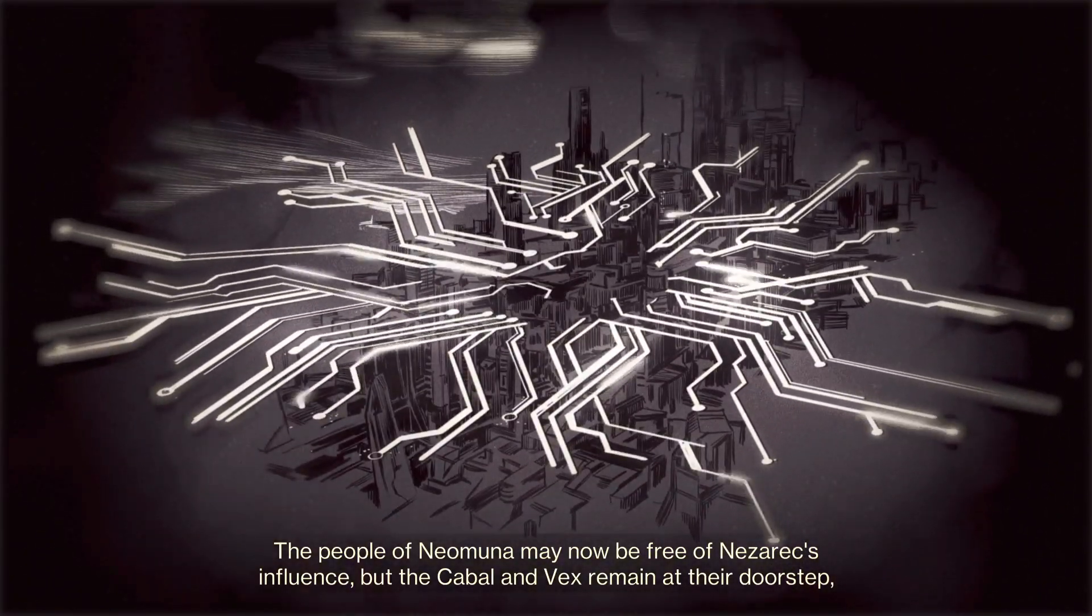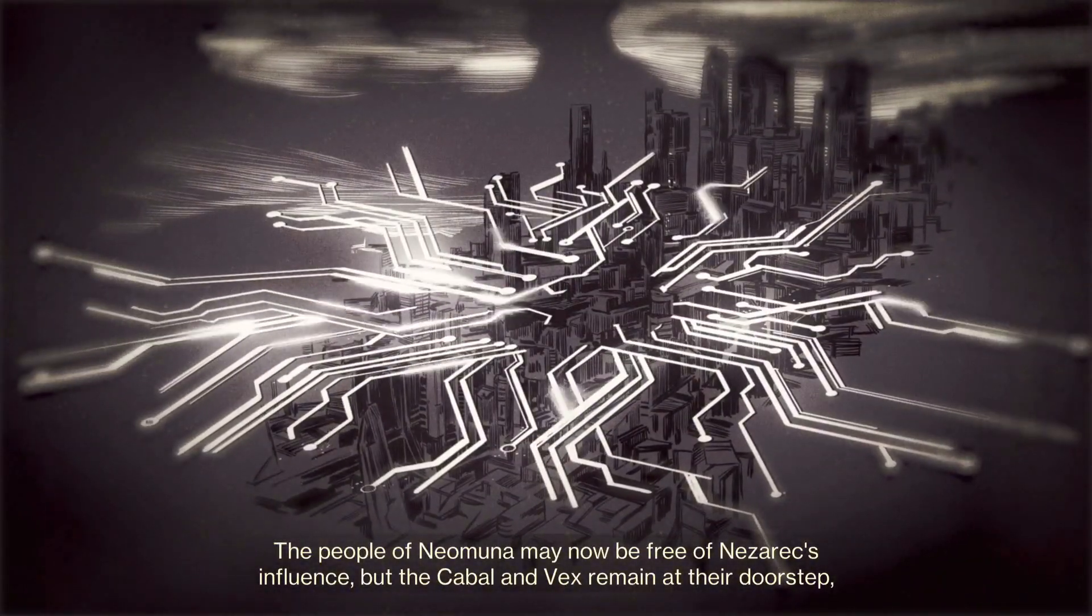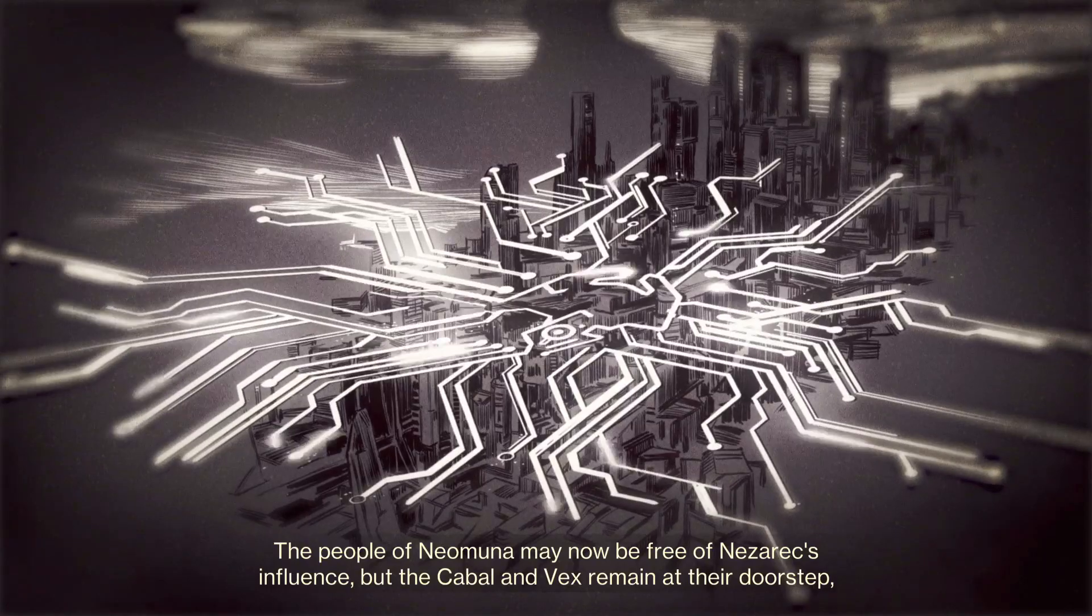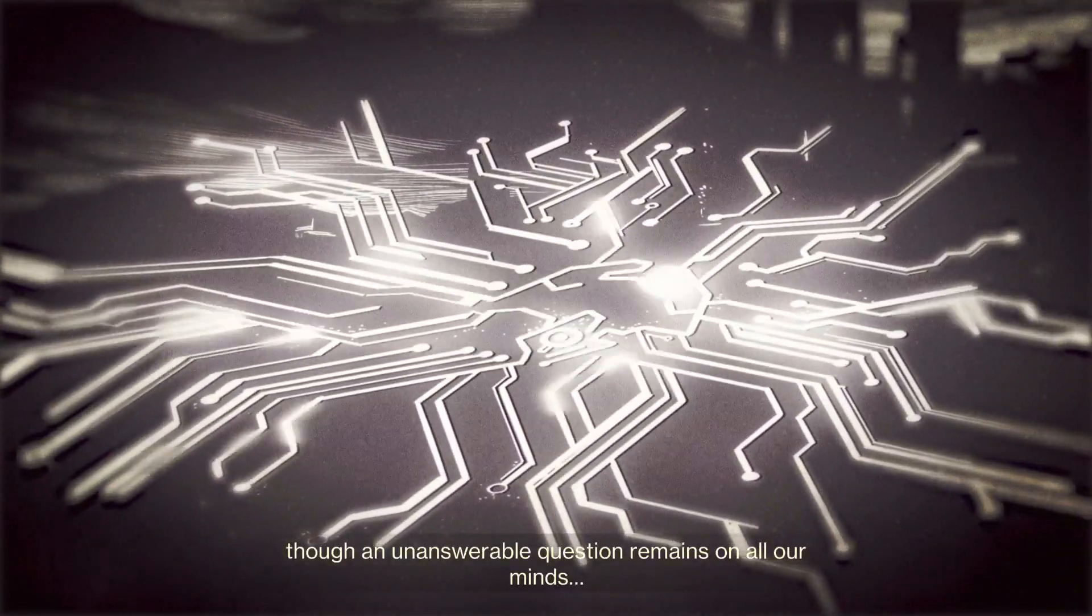The people of Neomuna may now be free of Nazarek's influence, but the Cabal and Vex remain at their doorstep, though an unanswerable question remains on all our minds.